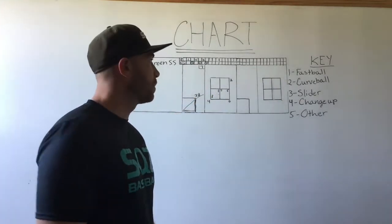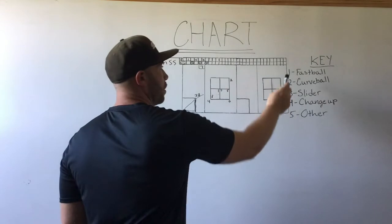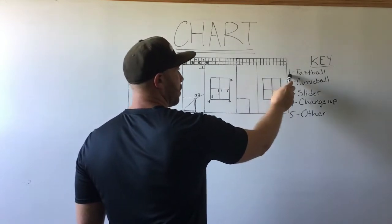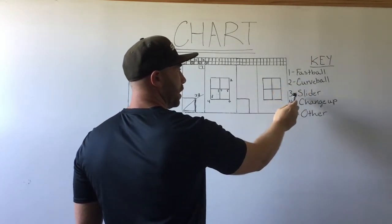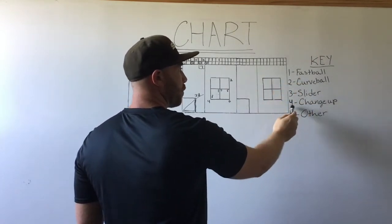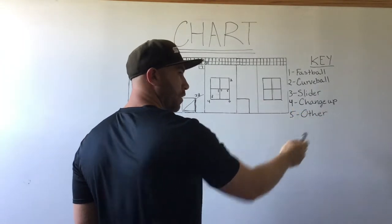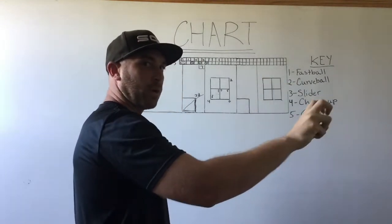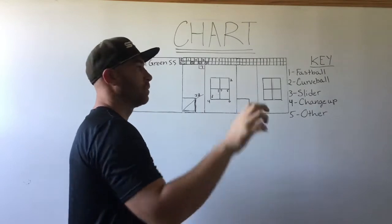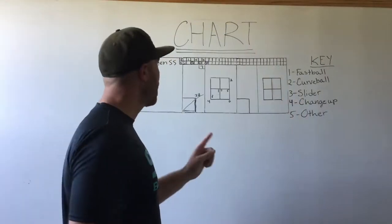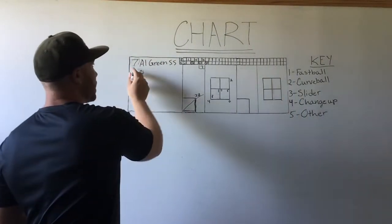Here's the key: number one is a fastball, two is a curveball, three is a slider, four is a change-up, five is other — other means knuckleball, splitter, cutter. You're going to face Al Green, he's number seven.